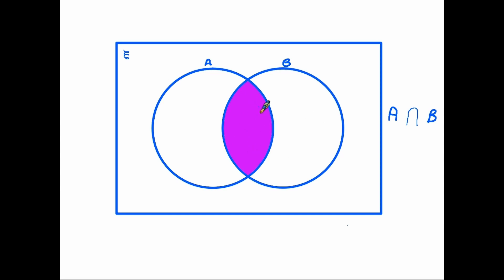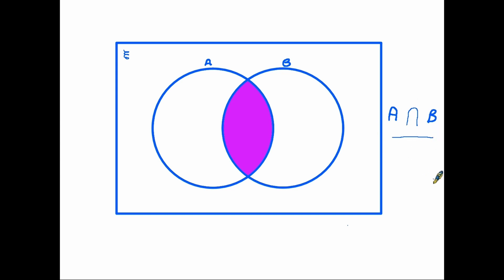Going back to the center area — this is the area where the two circles intersect each other. If you are looking to describe the numbers that appear just in the center section, it is called the intersect, where A intersects with B. The notation is similar, but in this case the large U-shape has turned itself upside down, and this symbol means intersect.